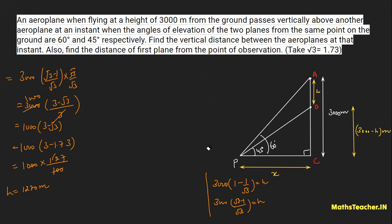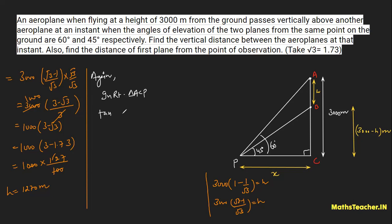Now for the second part — finding the distance AP. AP is the hypotenuse of the bigger right angle triangle ACP. The angle at P is 60 degrees. Since AP is the hypotenuse and AC is the perpendicular, we use sin 60 degrees = perpendicular over hypotenuse = AC over AP. We don't need the value of x here.